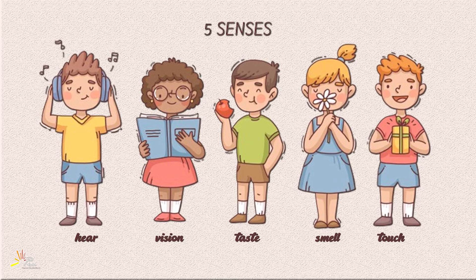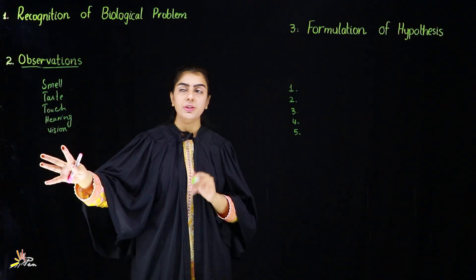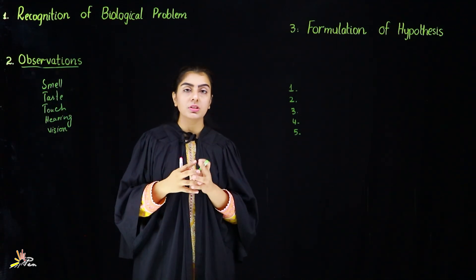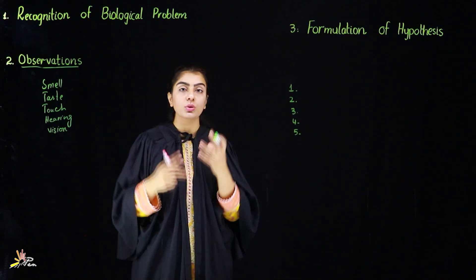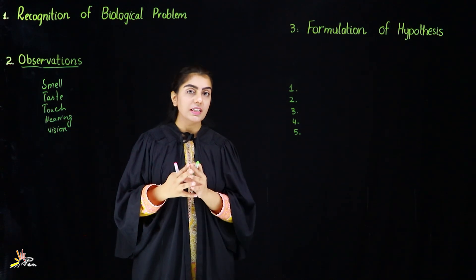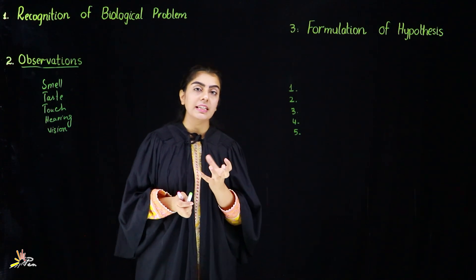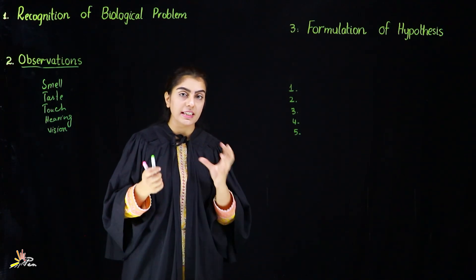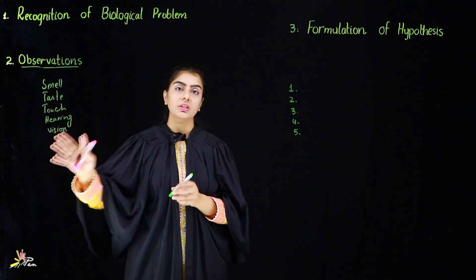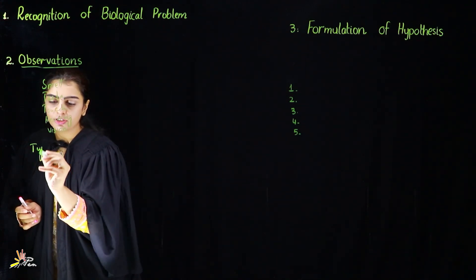These are the five senses that can be used to make observations. You use these senses — you see, you hear, you taste something, or you touch it. By doing all this you observe whether and how the given problem can be solved, and you collect data about it. Now your observations are of two types.